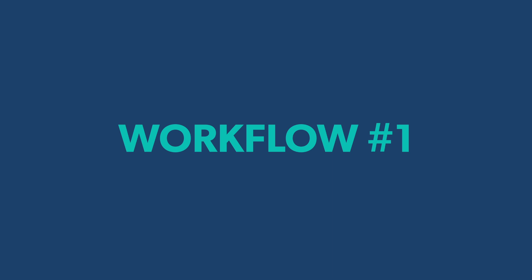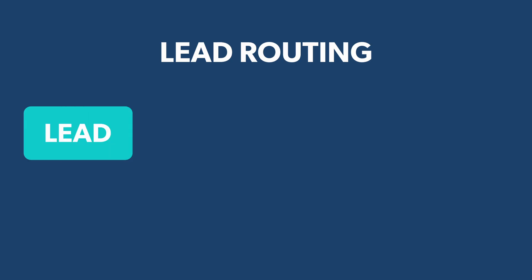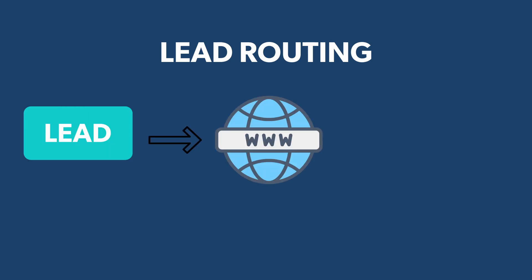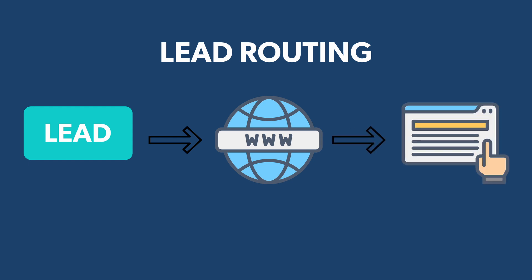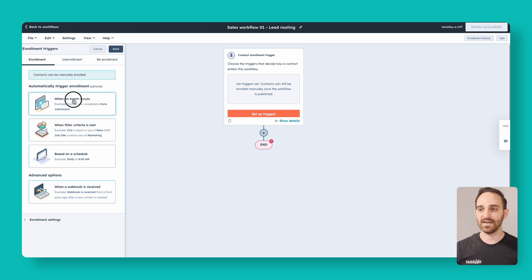The first one we're going to build is one for lead routing. The example I'm going to use here is when a new lead comes in or an existing contact comes to your website, fills out a demo request form or a contact us form. What you want to do is rotate those leads to your sales reps and notify them that they have a new person to reach out to. This is a contact-based workflow.